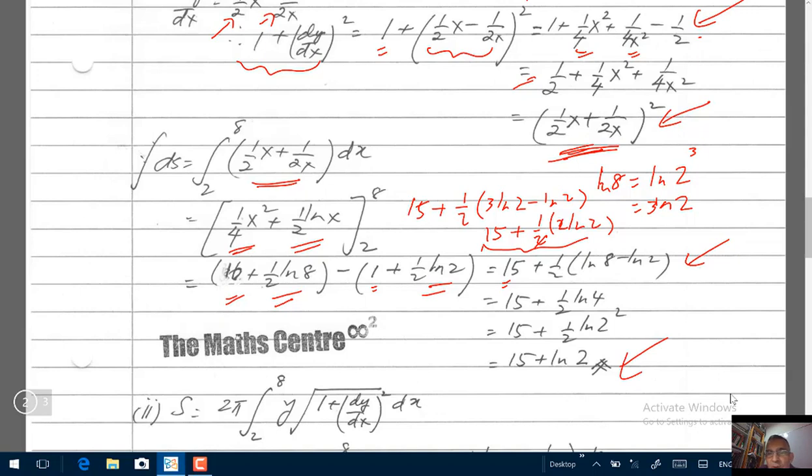I've also given you another way to work it here. 8 divided by 2 is 4. 4 is 2 squared. Bring the 2 down. And we're still getting the same answer. 15 plus log 2.